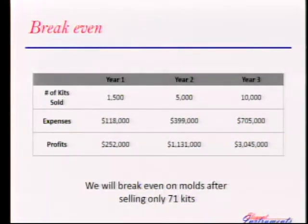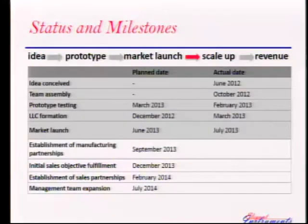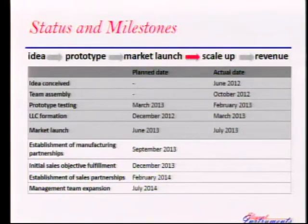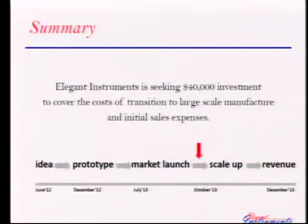It's very hard to accurately predict sales within the first three years, but the important point is that we will break even on the molds — our biggest investment during the first year — after only 71 kits sold, and that's a very achievable number. Within a year, we went from an idea to a fully functional prototype that our users really like, to a product that we've sold. Our future big step would be scaling up manufacturing procedures and attracting somebody with business expertise to help run the company. We're currently looking for an investment of $40,000, which will help us transition to large-scale manufacturing and bring the product to market within just a couple of months.